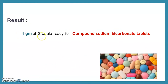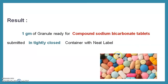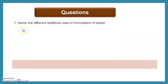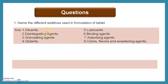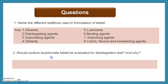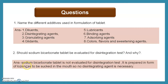Result: we prepared 1 g of granules ready for compound sodium bicarbonate tablet, submitted in a tightly closed container with a neat label. Question 1: name the different additives used in tablet formulation. Answer: diluent, disintegrating agent, granulating agent, glidants, lubricants, binding agents, adsorbing agent, colorant, flavors, and sweetening agents. Question 2: should sodium bicarbonate tablet be evaluated for the disintegration test and why? Answer: No, because it is prepared in the form of lozenges to be sucked in the mouth, so no disintegration is necessary.